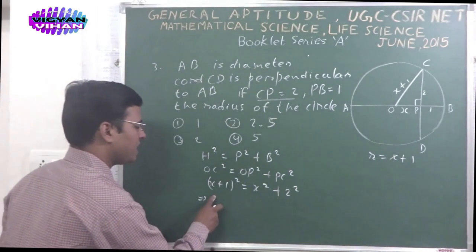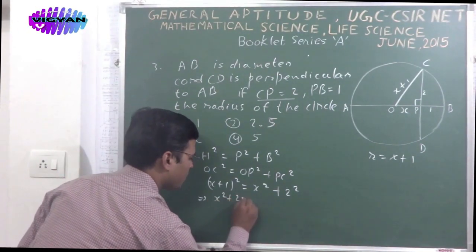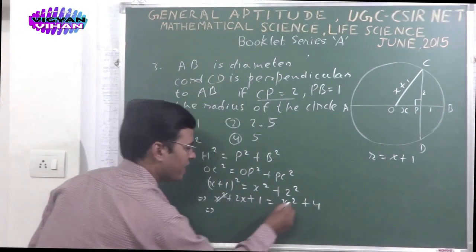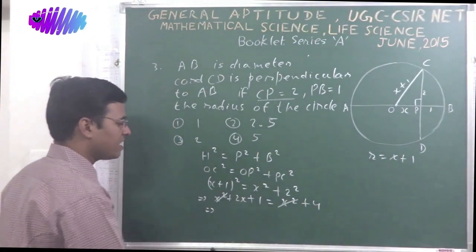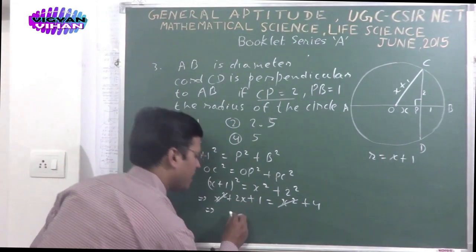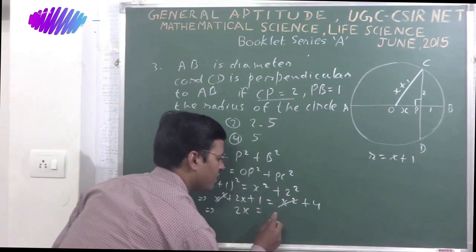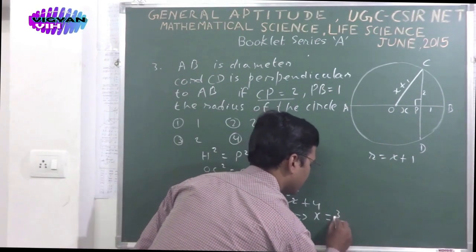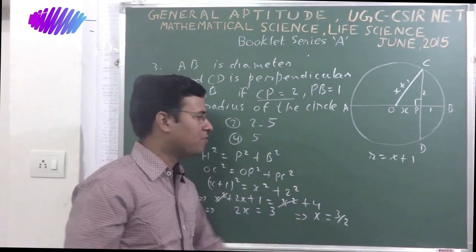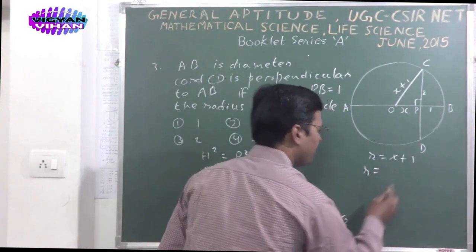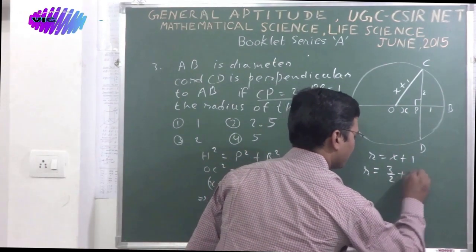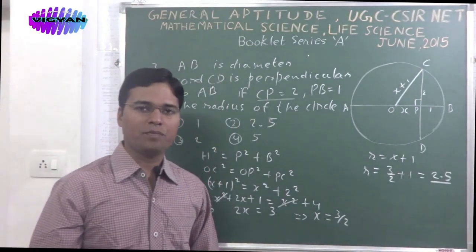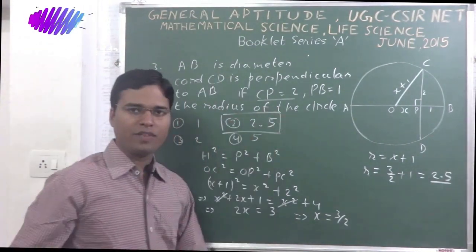Then simplify this equation. We would get x square plus 2x plus 1 is equal to x square plus 4. Then x square in both sides cancel out. And the remaining terms are here: 2x is equal to 3. Then you can write here, the x value is 3 by 2. If the x value is 3 by 2, then the radius of this circle would be 3 by 2 plus 1. It is now 2.5. The correct answer of this problem is option 2, 2.5.